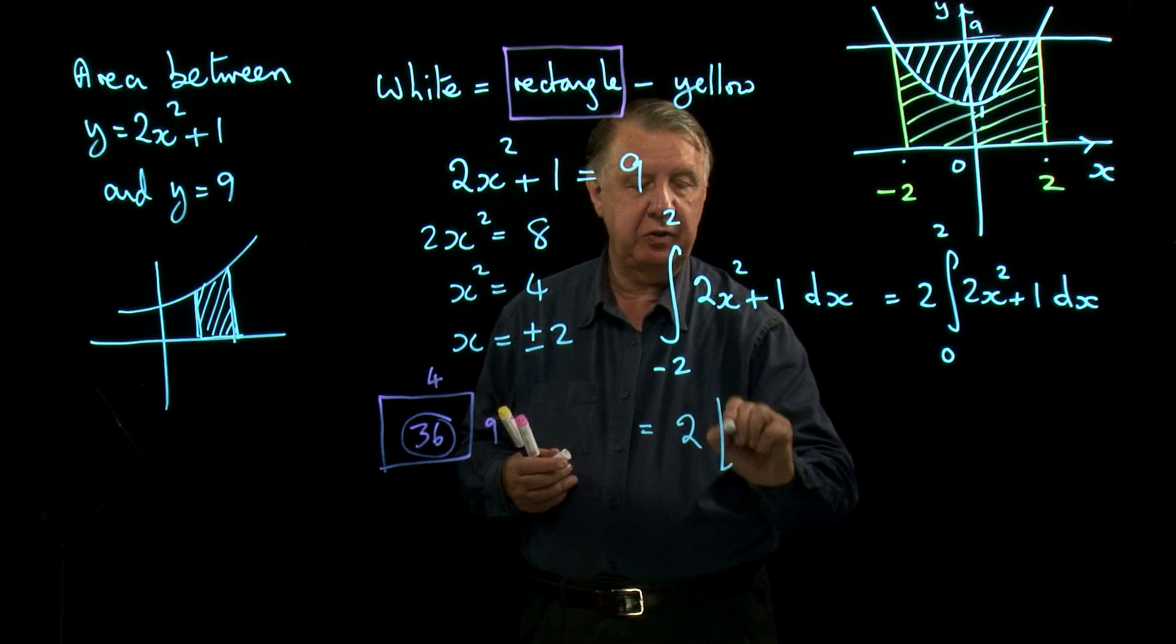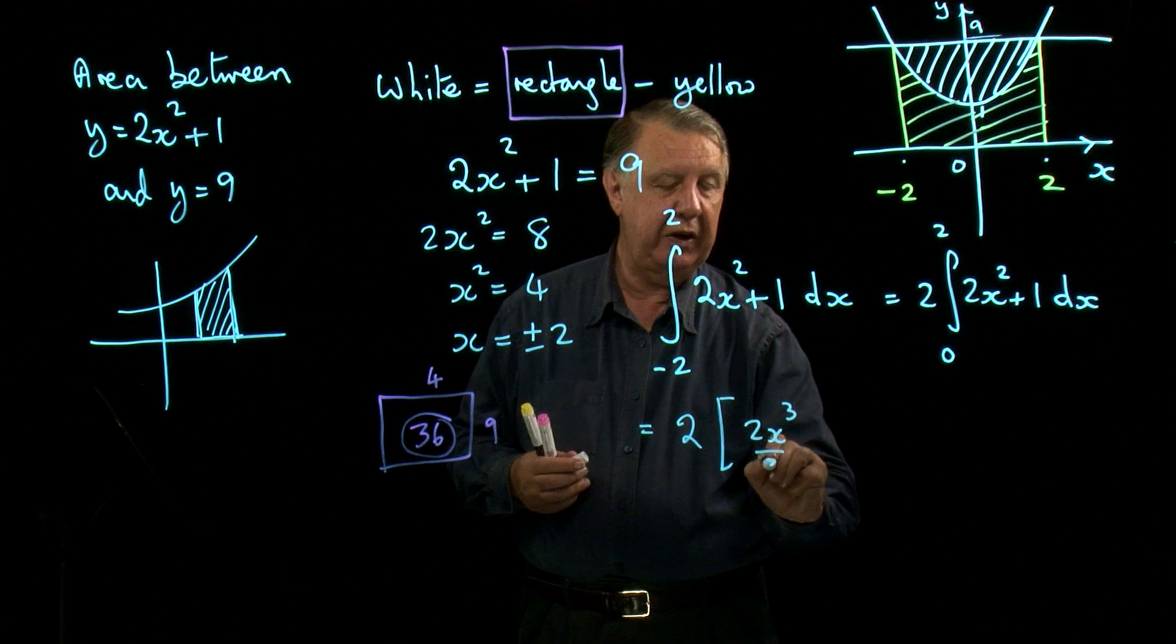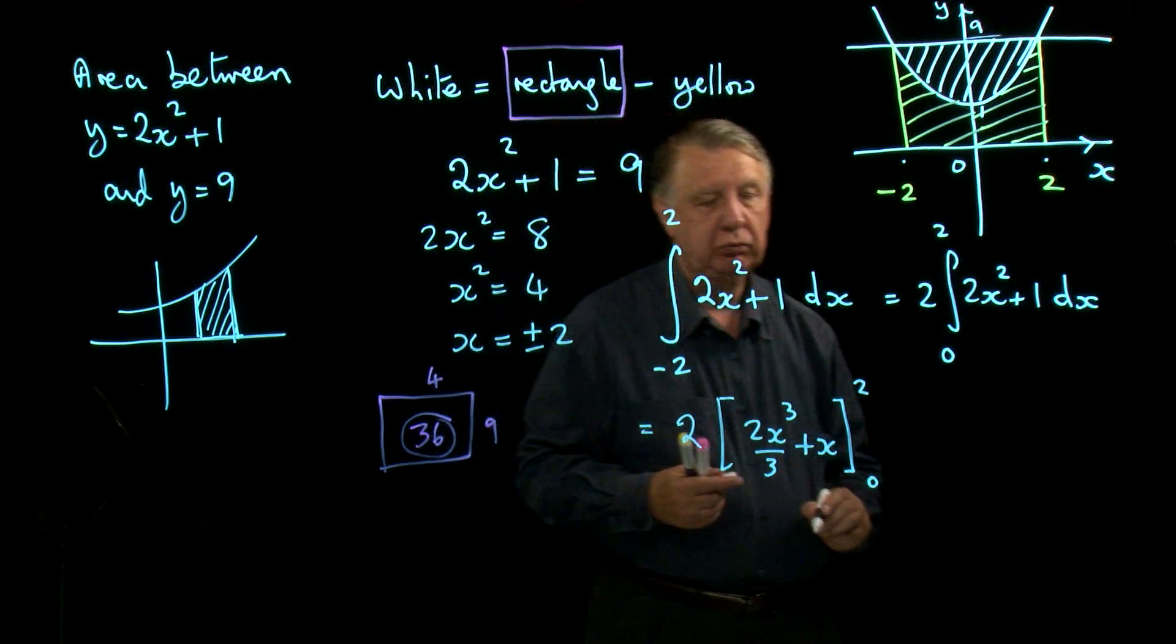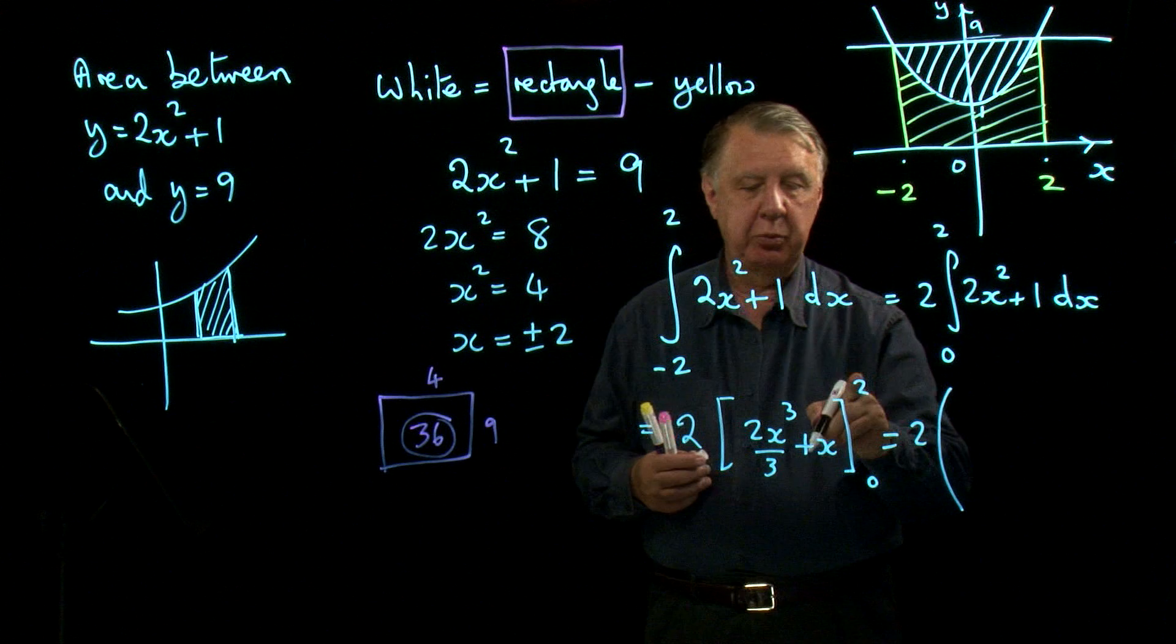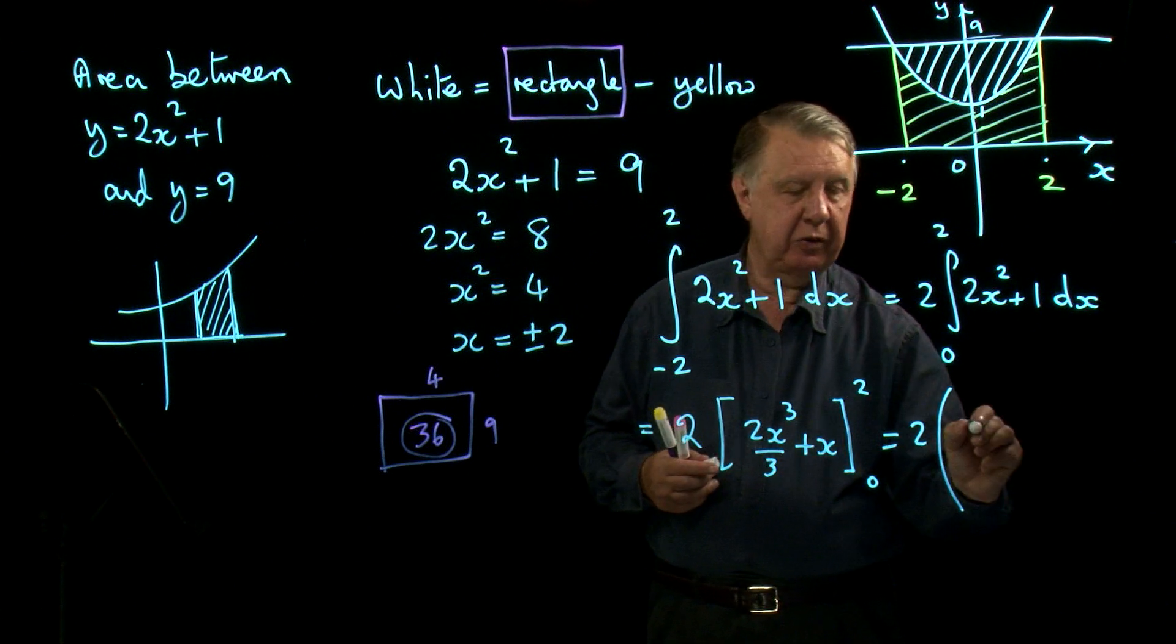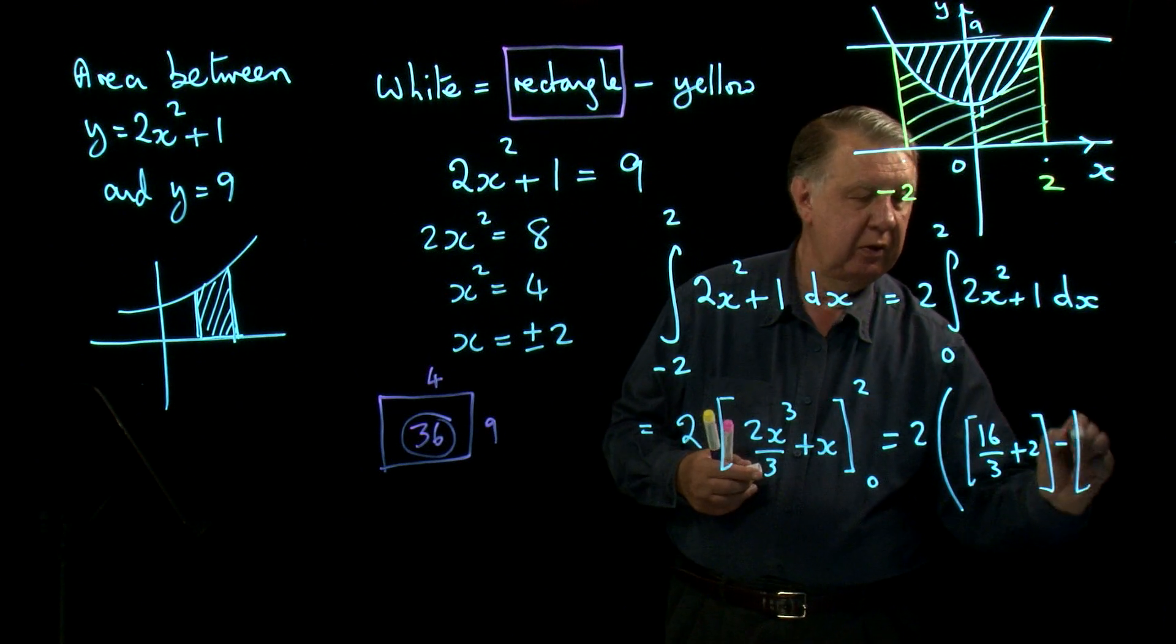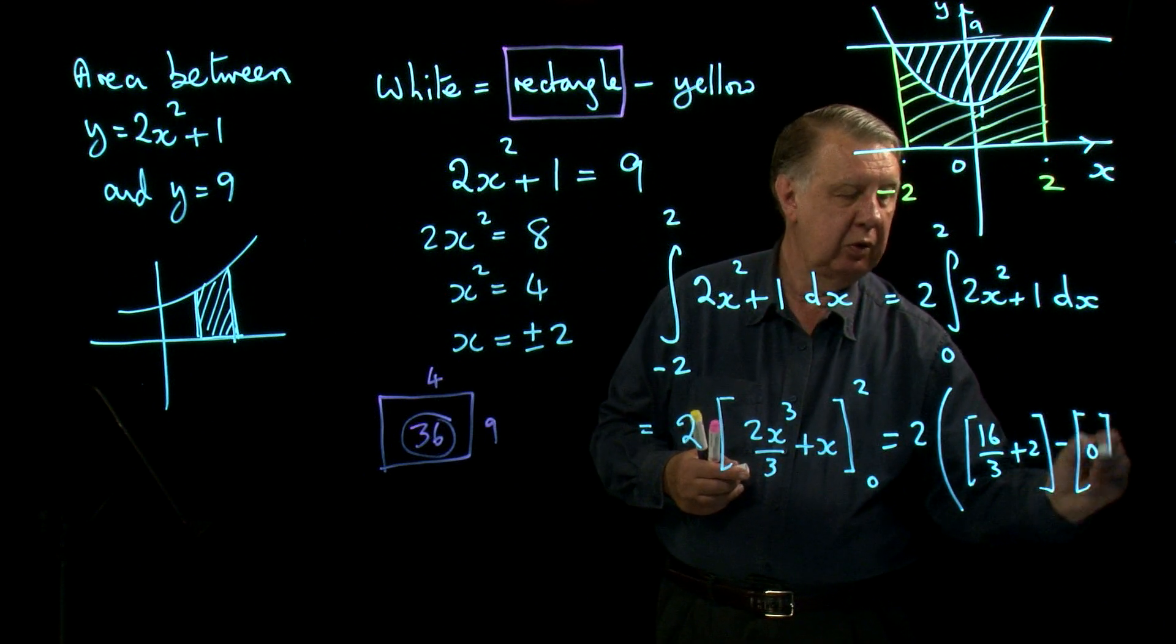So twice the integral: 2x cubed over 3 plus x, between 0 and 2. So that's twice. Put 2 into here gives you 8 times 2, 16 over 3 plus 2, minus put 0 into here gives you 0.